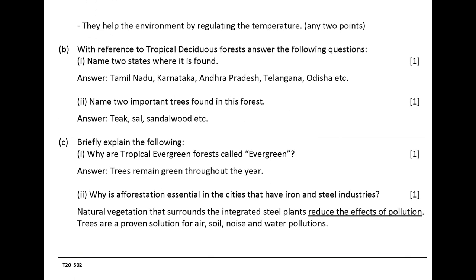With reference to tropical deciduous forests answer the following questions. Name two states where it is found. Answer: Tamil Nadu, Karnataka, Andhra Pradesh, Telangana, Odisha, etc. Name two important trees found in this forest. Answer: teak, sal, sandalwood, etc.